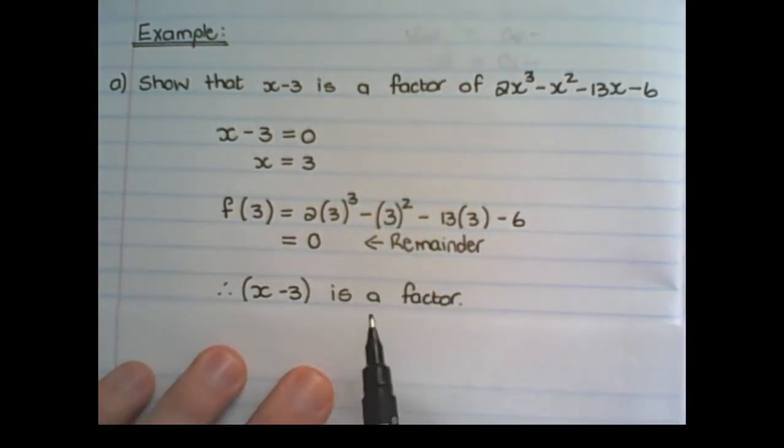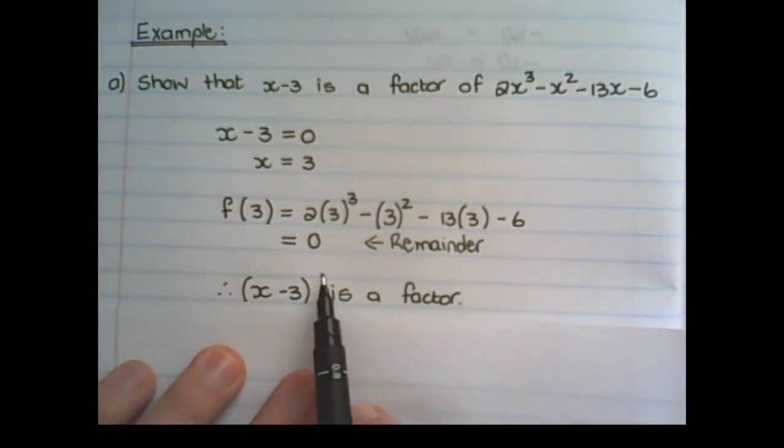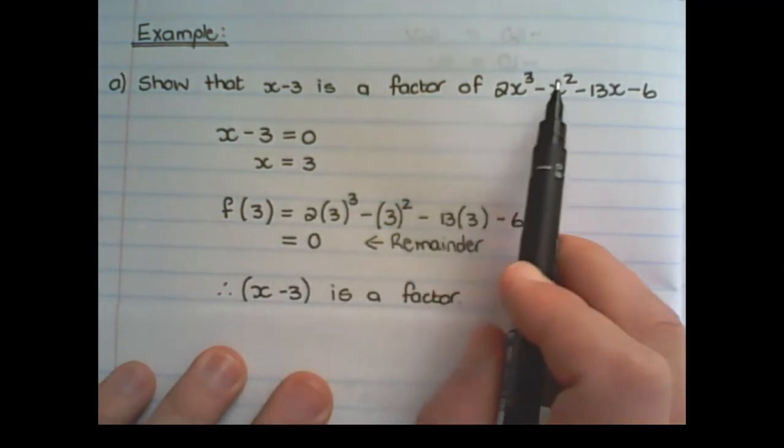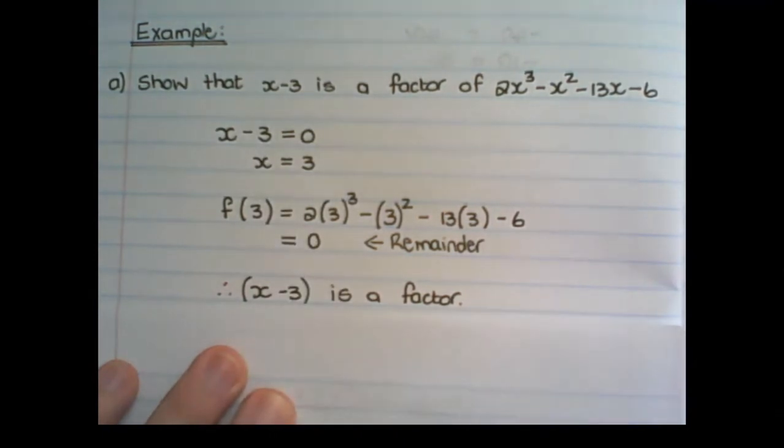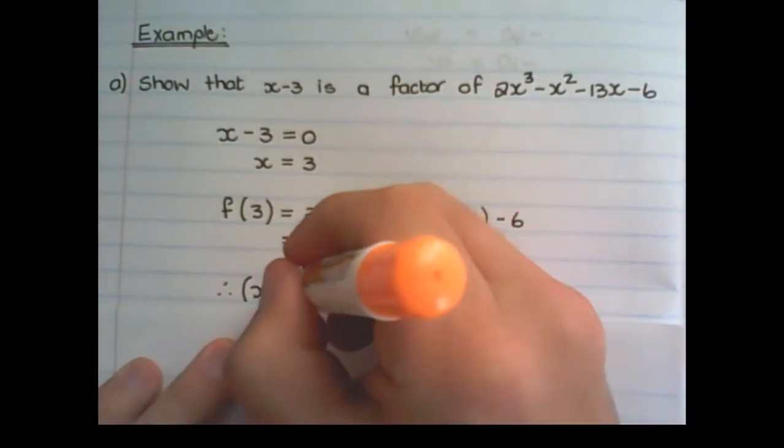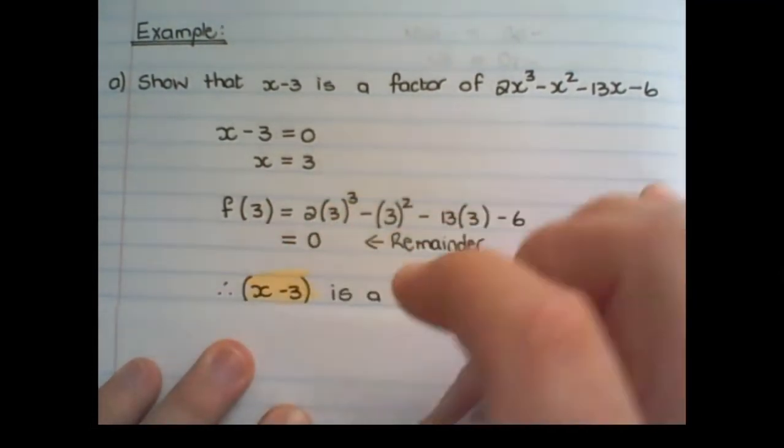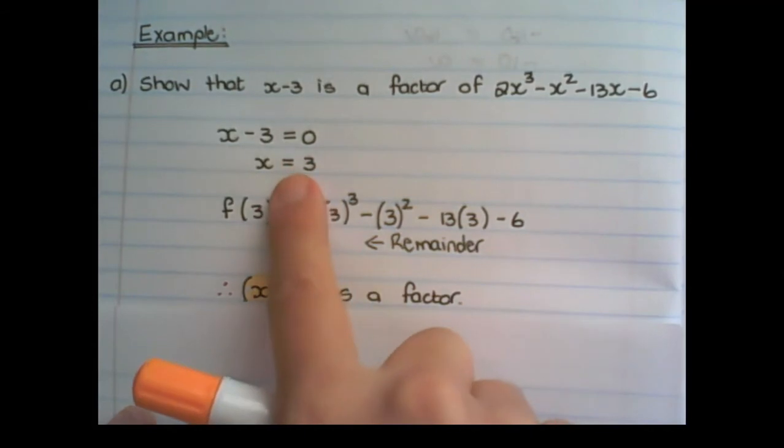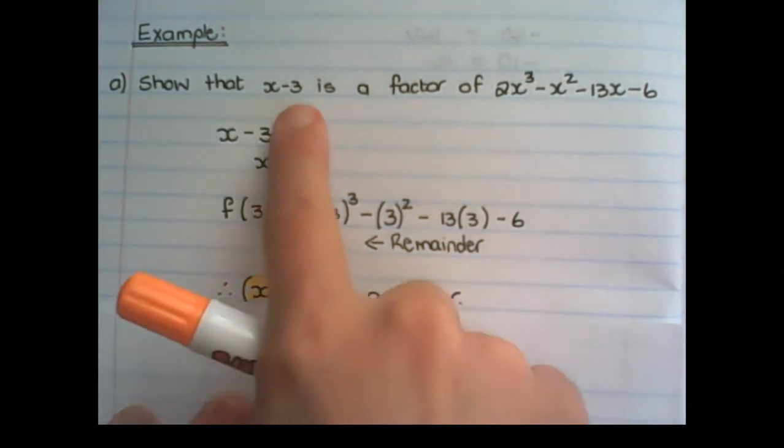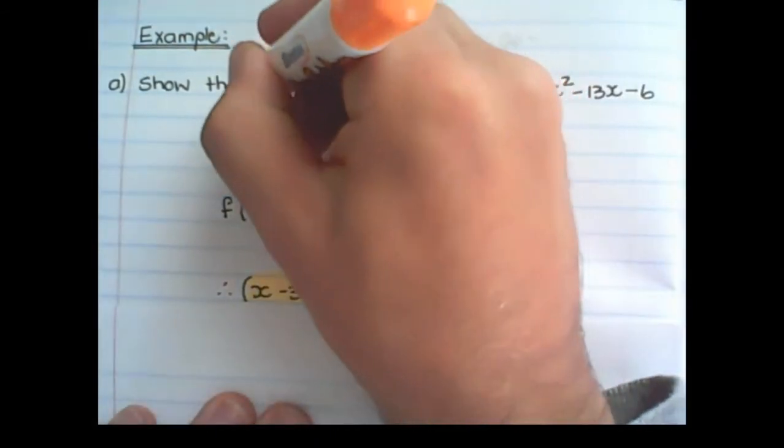And because the remainder is zero when I substitute 3 into that expression, then we say x minus 3 is a factor. Notice we say x minus 3 is a factor, not x equal to 3, but the expression of x minus 3.